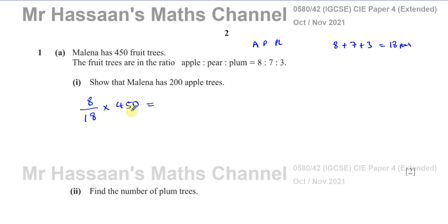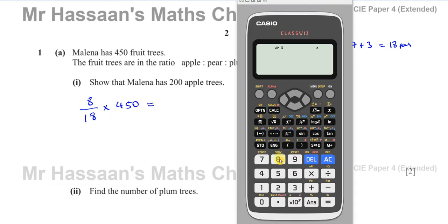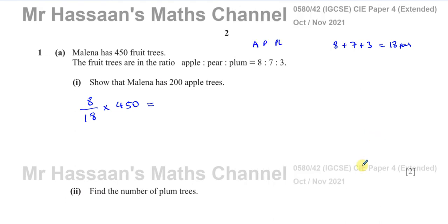So 8 over 18 multiplied by 450 gives us 200 — yes, it does. That's equal to 200 trees. So it says you have to show that she has 200 apple trees, and that's how you can show it.